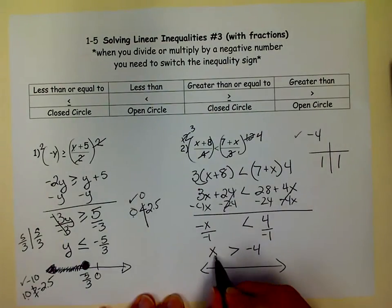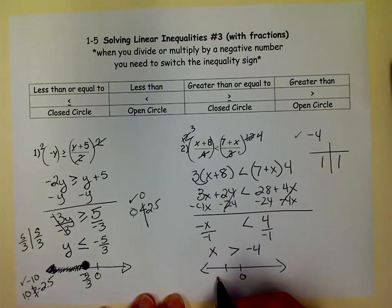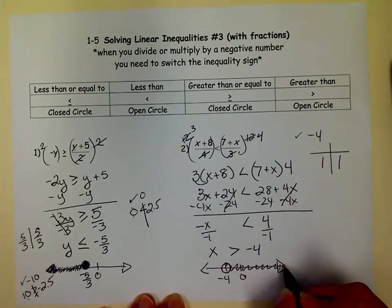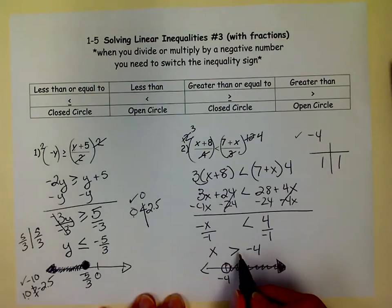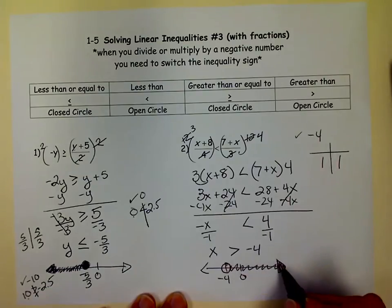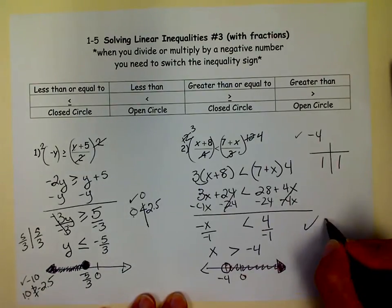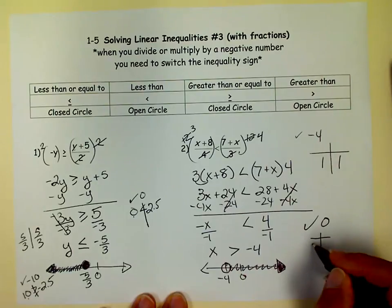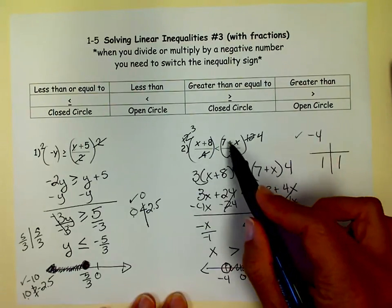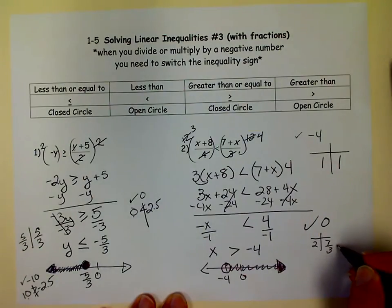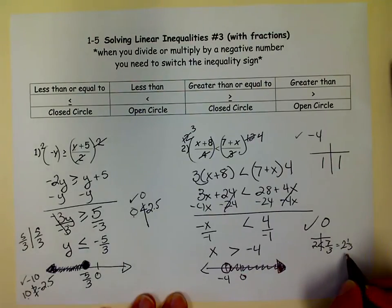So now I want to graph. This says x is greater than negative 4. So it's an open circle because it's greater than. And my arrow is pointing to the right. And if the variable is on the left, you can always follow that arrow. Remember that. But x is greater than negative 4. So I'm wanting all the numbers that are greater than negative 4. Now I'm going to check 0. So I want to make sure I shaded correctly. So if I put a 0 in there, I get 8 divided by 4, which is 2. And if I put a 0 in here, I get 7 thirds. Now, I don't know if you know what 7 thirds is, but if you change it to a mixed number, it's 2 and a third. And 2 is definitely less than 2 and a third. So we know we're right.